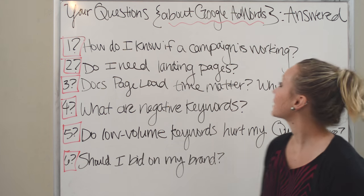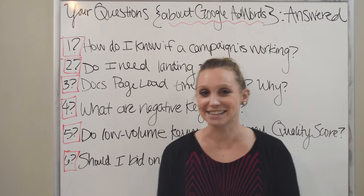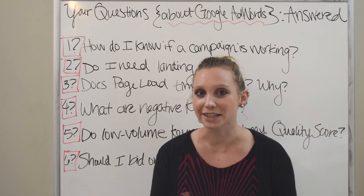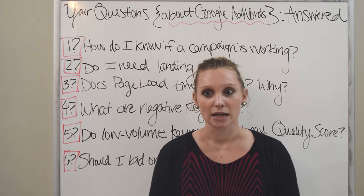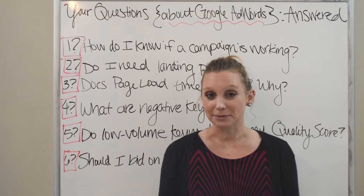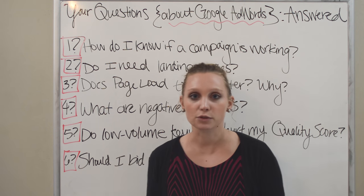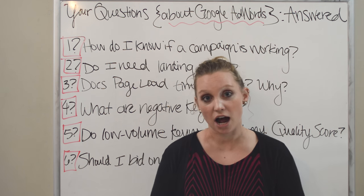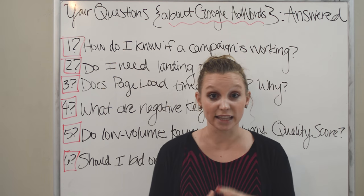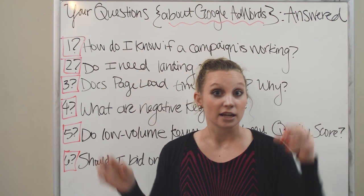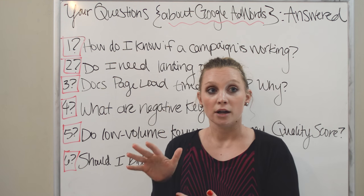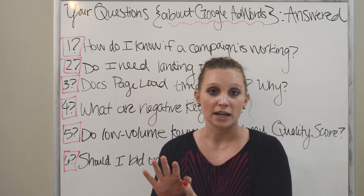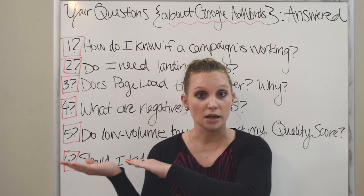Question number one: How do I know if a campaign is working? This is probably the most frequent question we hear, because you don't want to be wasting money with a Google AdWords campaign that isn't making your chiropractic practice any money. The number one thing to do is to install conversion tracking software on your website. This basically links up your AdWords account and your analytics account to your website so that Google can track where people are going when they go to your website.